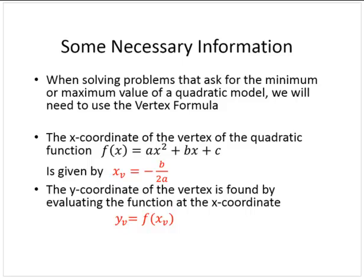In general, when we're solving problems that ask for the minimum or maximum value of a quadratic model, we will need to use the vertex formula. The vertex formula tells us that the x-coordinate of the vertex of the quadratic function f(x) = ax² + bx + c is given by x_v = -b/2a, where we get the a and the b from the coefficients of the function.